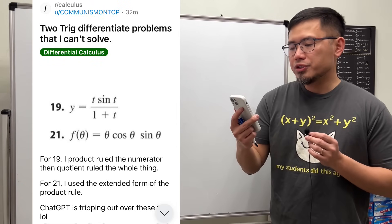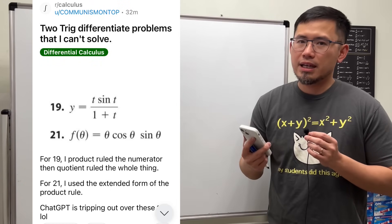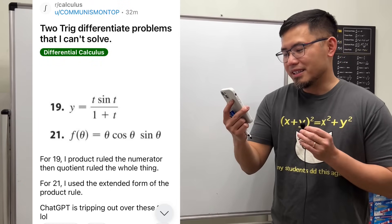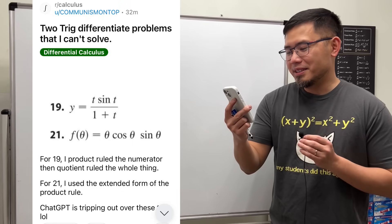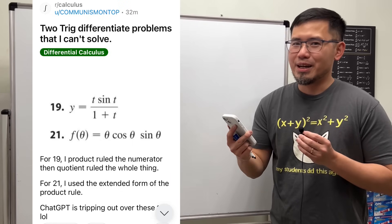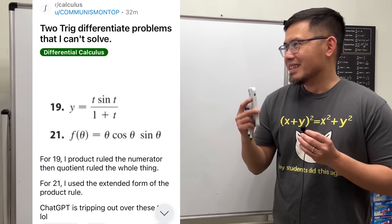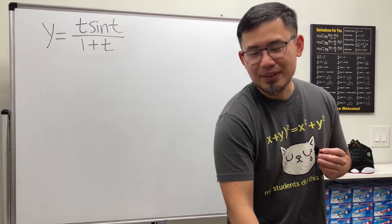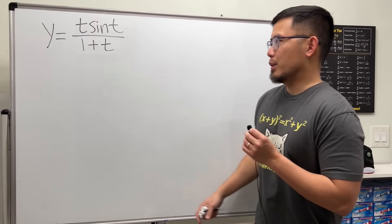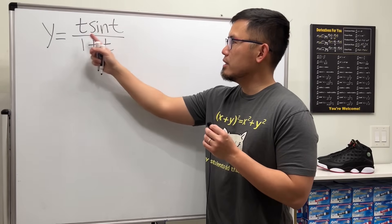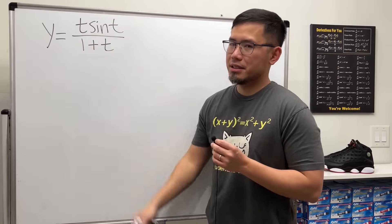Two trick differentiation problems that I cannot solve. At the end it says ChatGPT is tripping out over this. So I will take a look at ChatGPT later on, but for now let's see how we can differentiate t times sine t over 1 plus t.